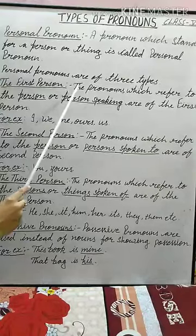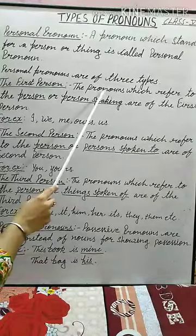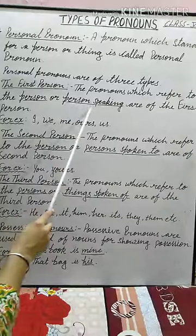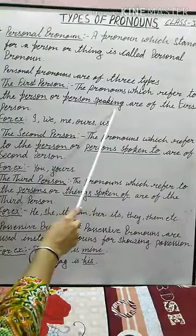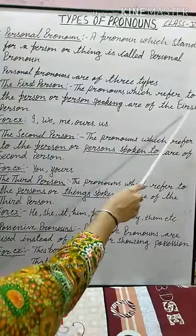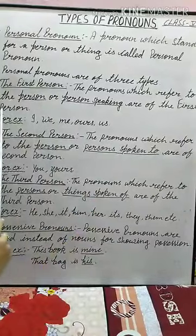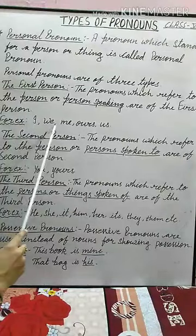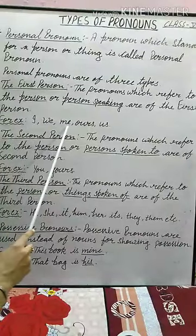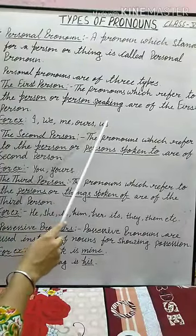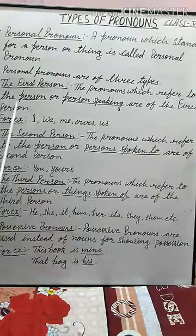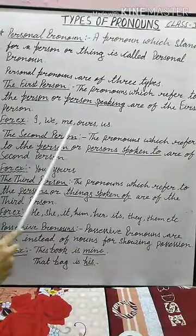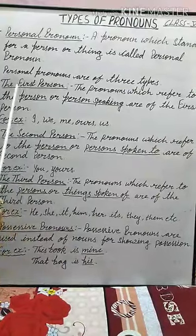The first person. The pronouns which refer to the person or persons speaking are of the first person. For example: I, we, me, ours, us. These are the examples of first person. We use these words in the first person.